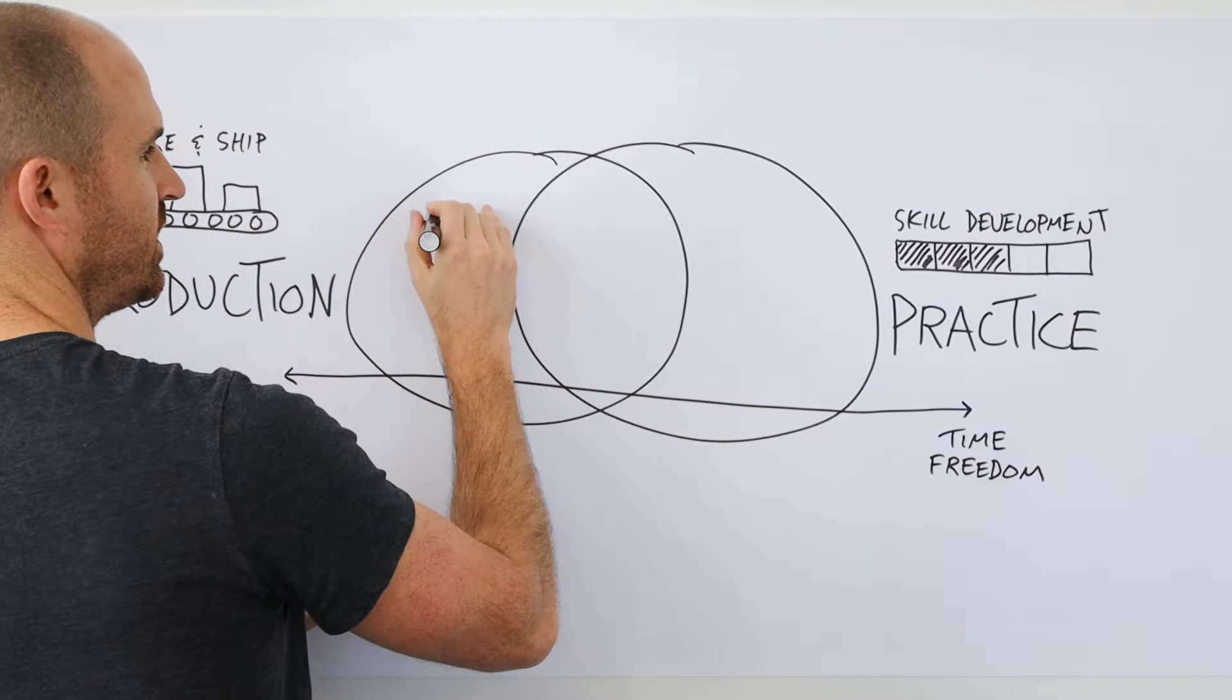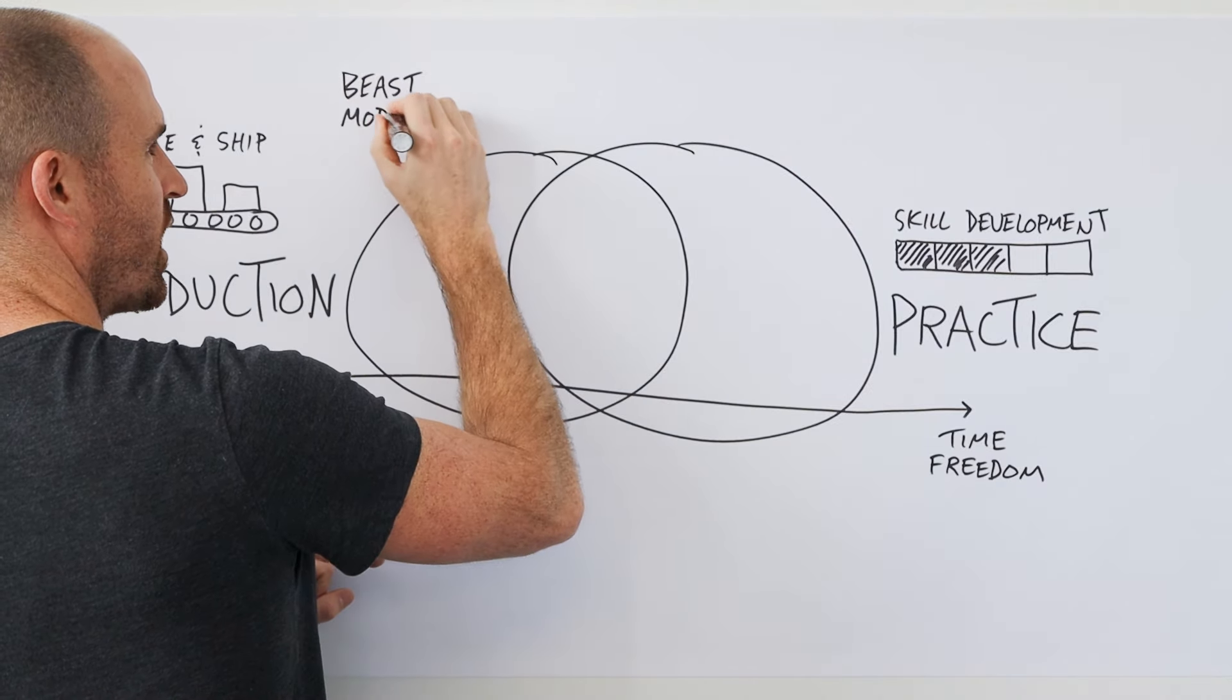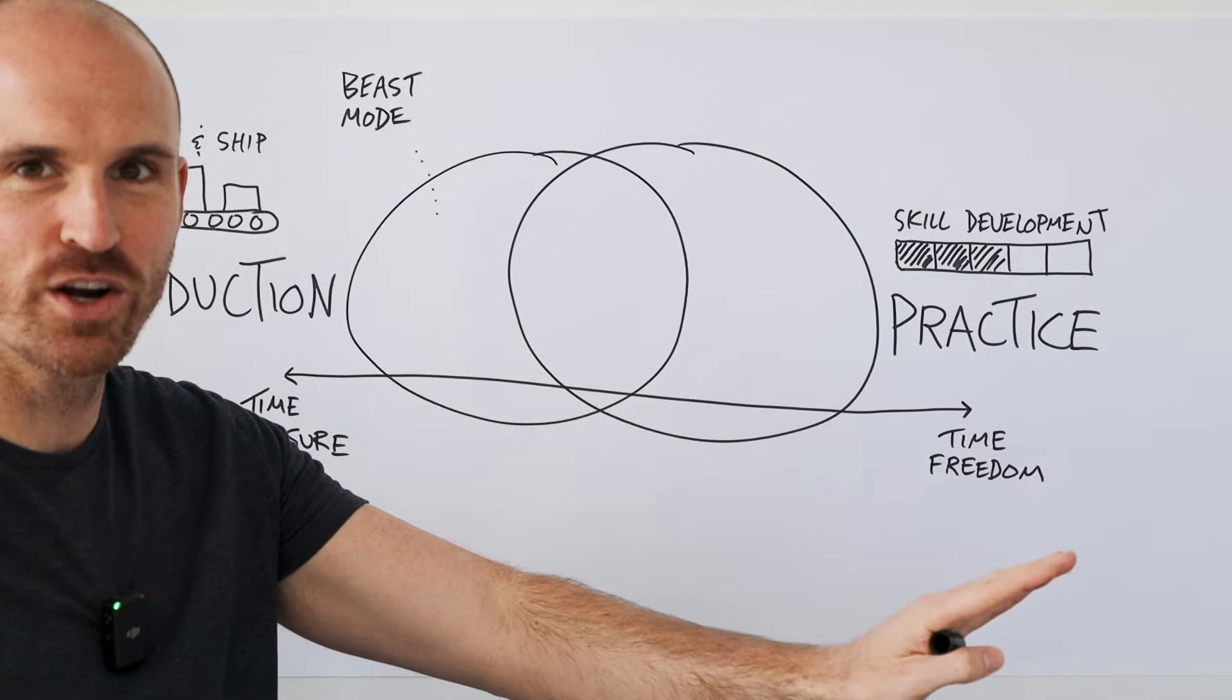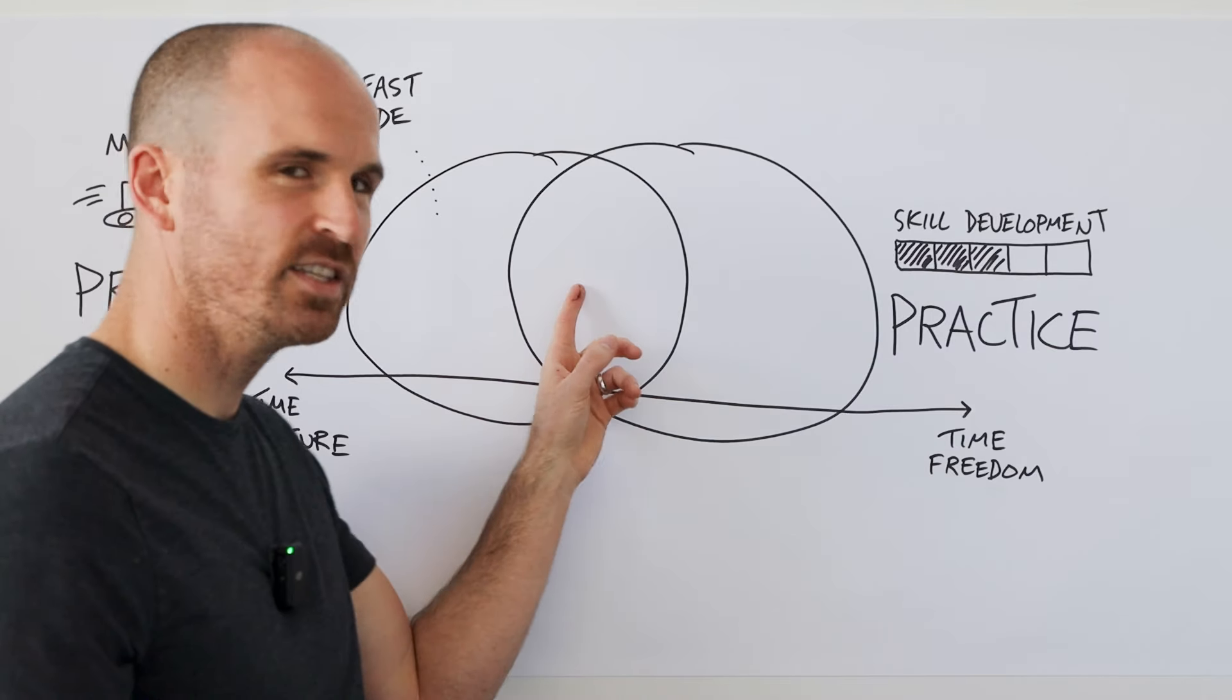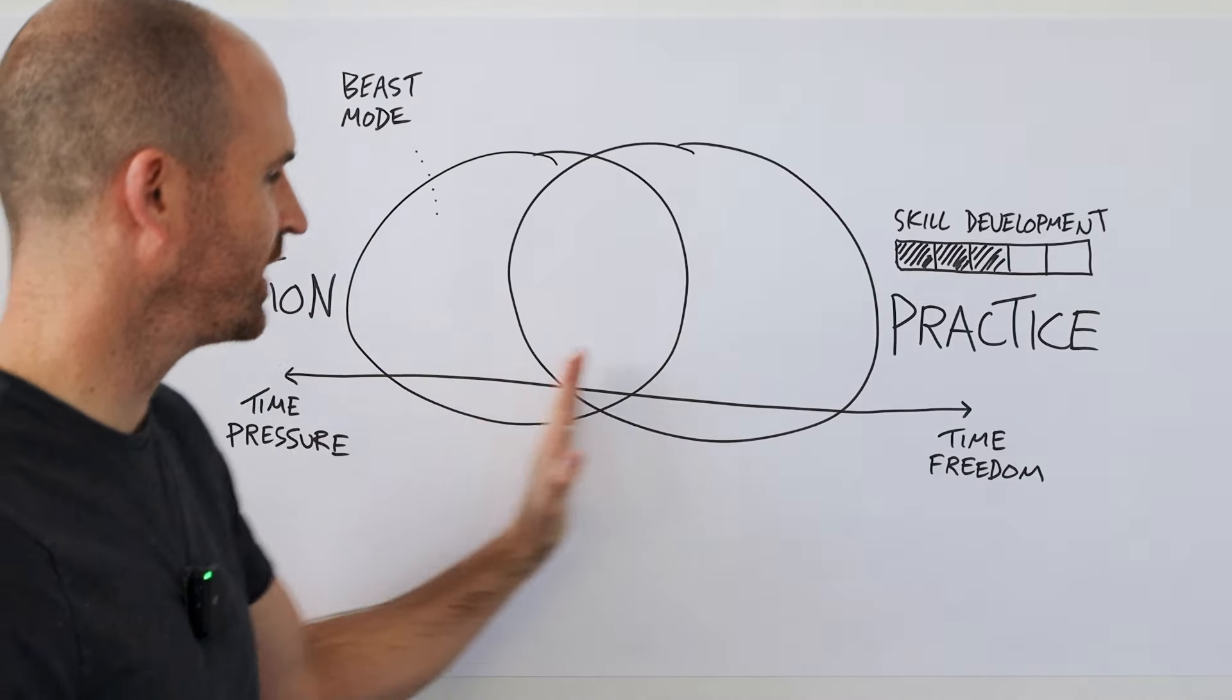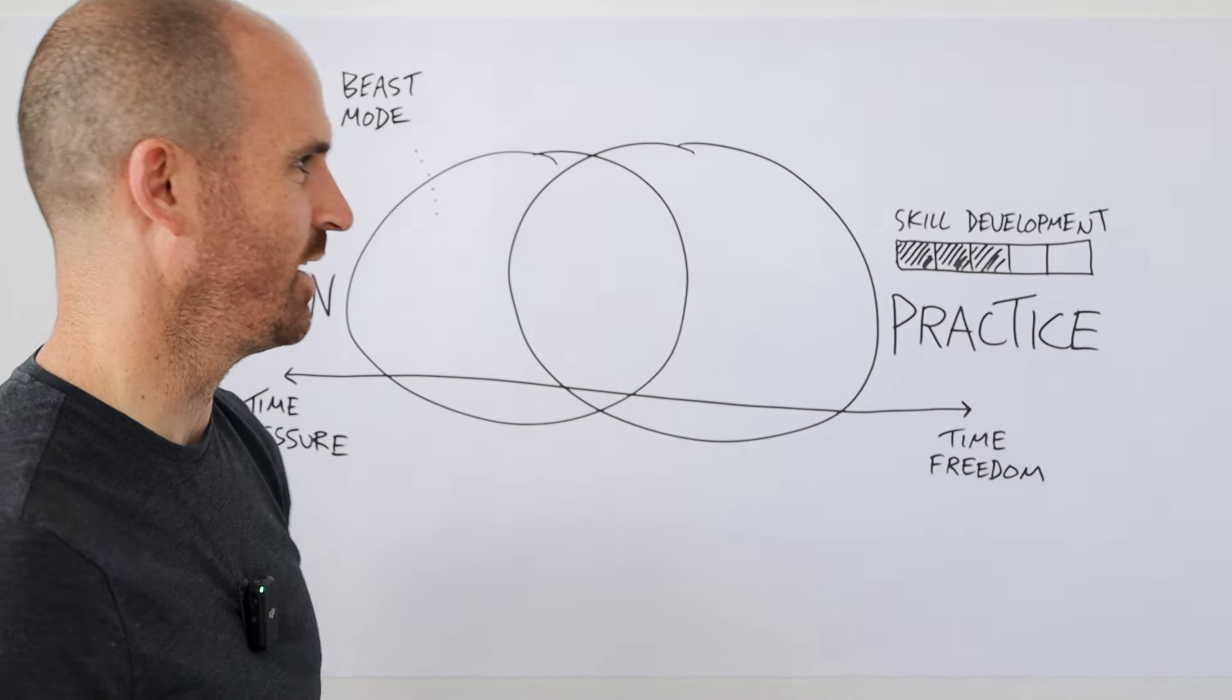One way you might think about this space here is by being in beast mode. This is where you're focused on production. You've got your head down. You're doing the work as well as you can, but also as quickly as you can. If you're in this space here, where you're still focused on production, but you've got a little bit of time freedom to perhaps do some practicing, some skill development...